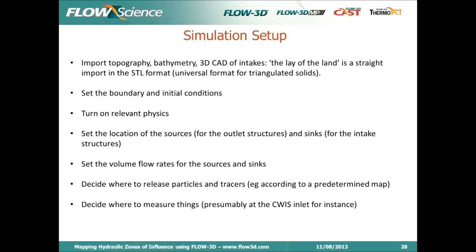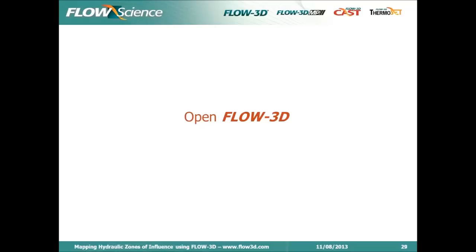We need to tell Flow3D what we want to measure and where. We have two options: we can use tracers — think of those as letting colored dye drift downstream to track its behavior — or we can release thousands of particles and watch them drift with the currents, interact with topography, and interact with the intakes and exhaust. To measure concentrations or particle counts around the domain, we can define flux surfaces known as baffles in Flow3D, or define control volumes anywhere in the domain.